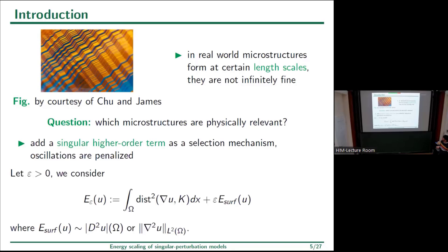One usually regularizes by adding a singular higher-order term — a surface energy — that penalizes oscillations of the gradient. For instance, taking epsilon small and adding to the elastic energy an epsilon times surface energy term, where the surface energy measures the interfaces between different states. Typical regularizations include the total variation of the second derivative of u, or norms of the Hessian.